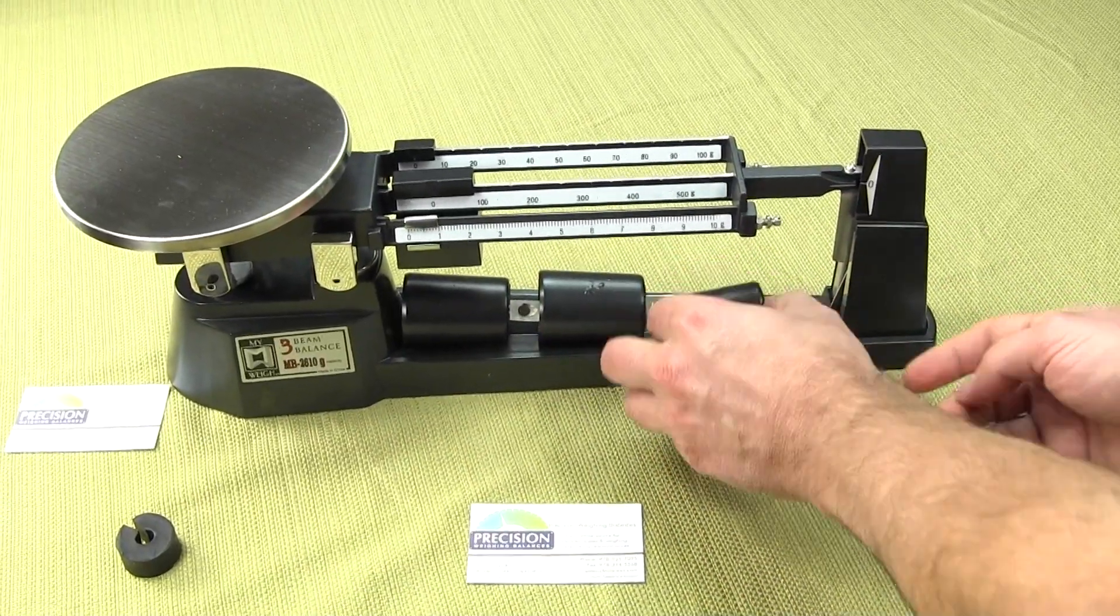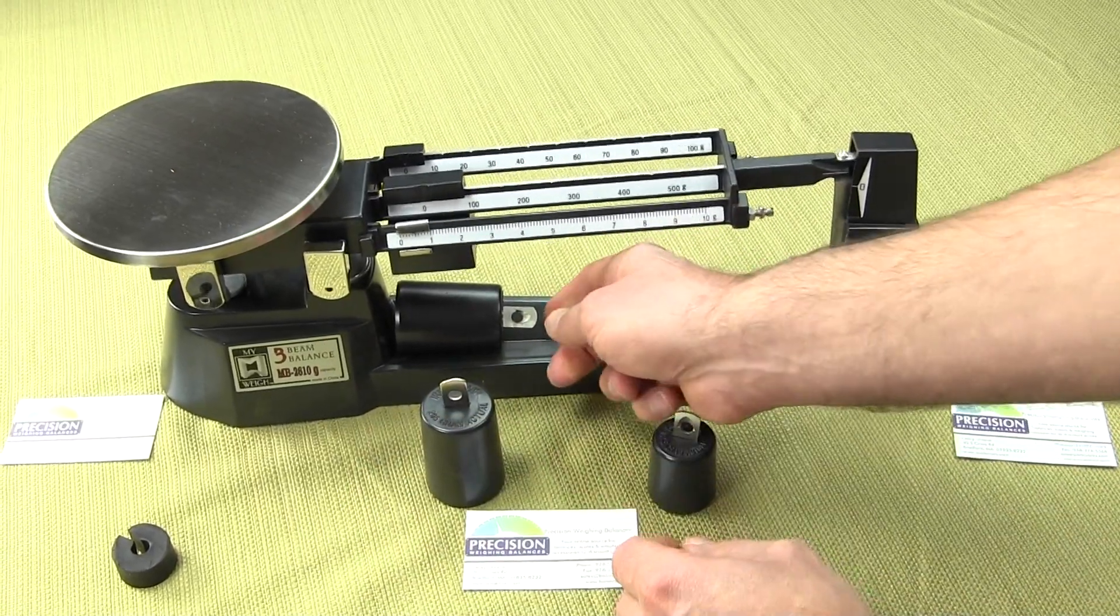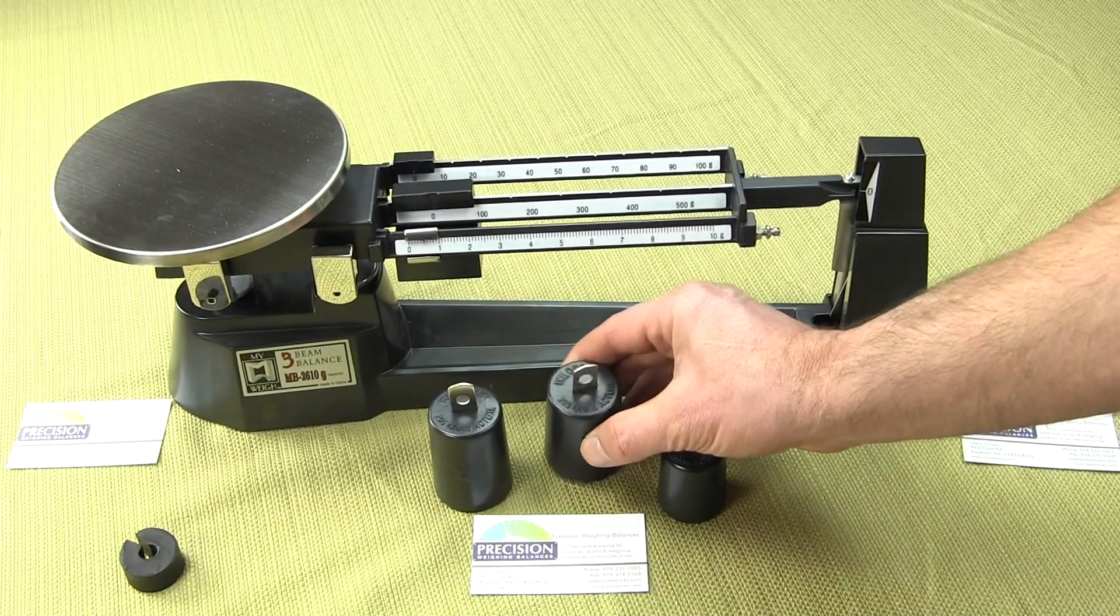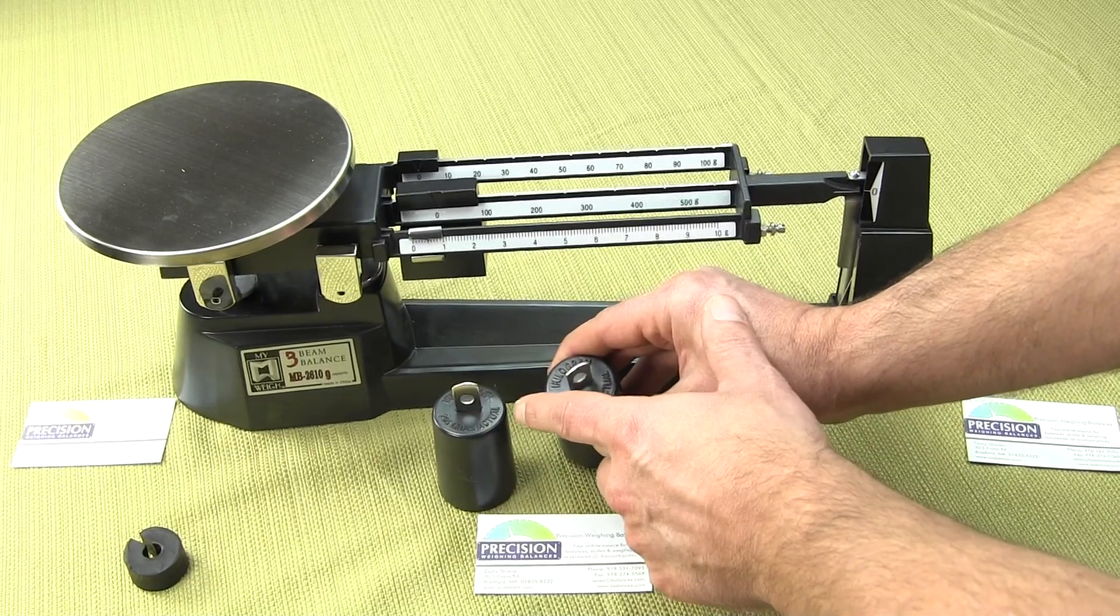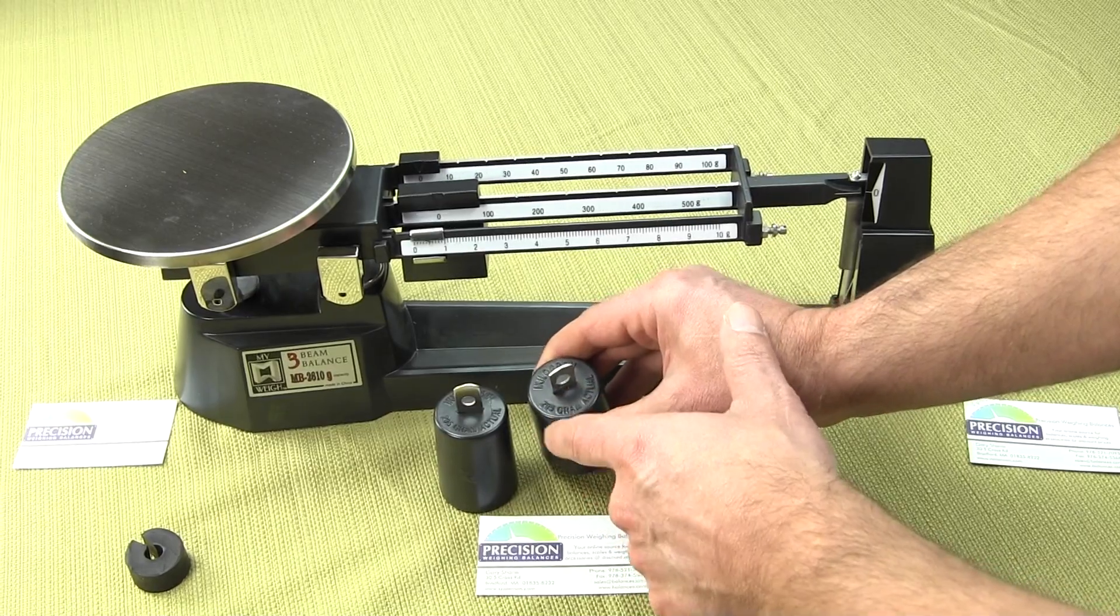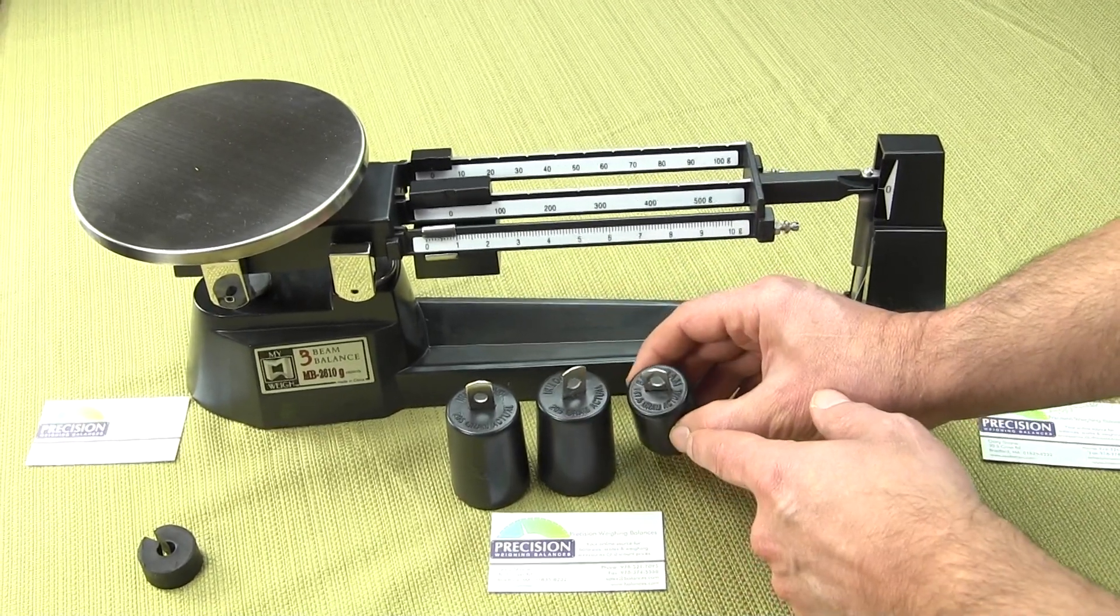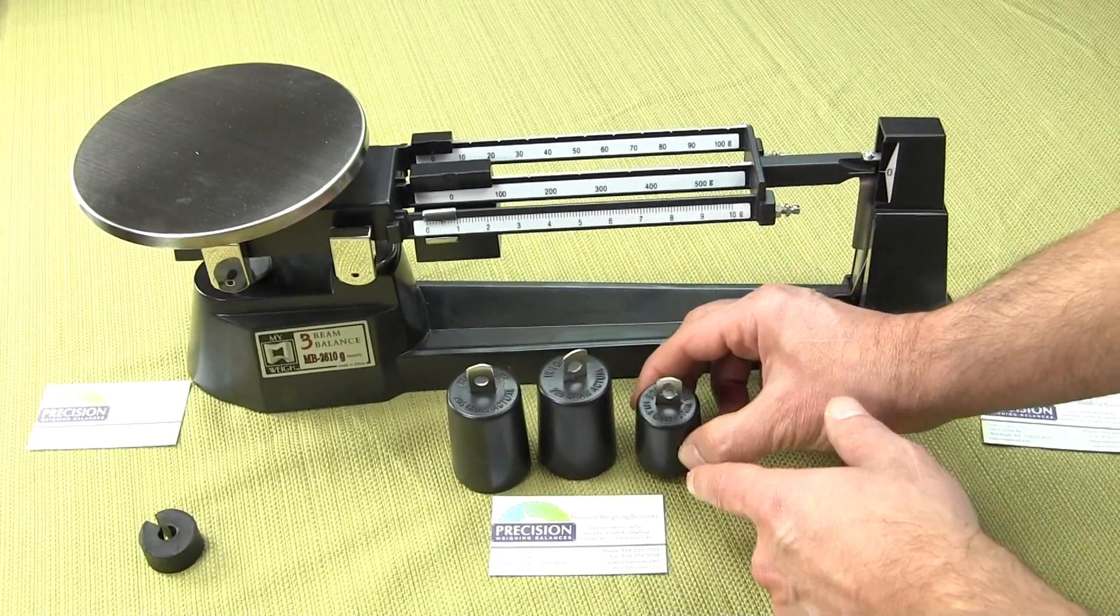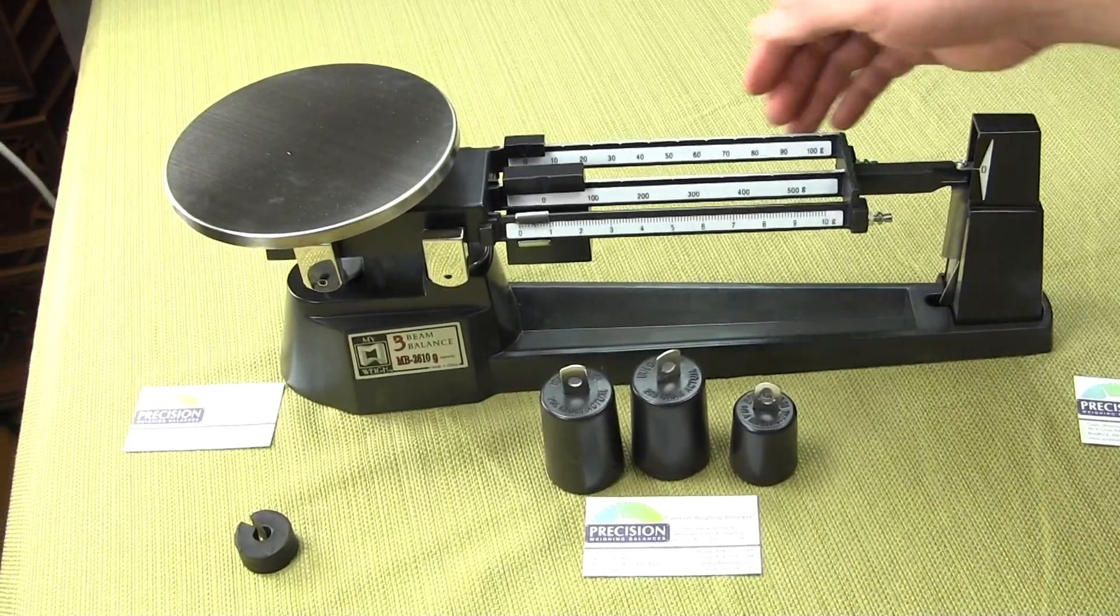You get two 1,000 gram and one 500. Now these attachment weights do not actually weigh 1,000 grams. They're printed on the top that the 1,000 gram weighs 295, so the actual weight of this mass is 295 grams. On the 500 gram weight, the actual weight is 147.5.